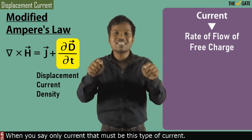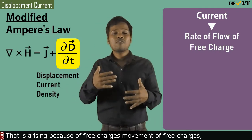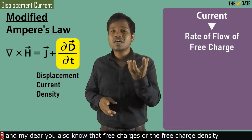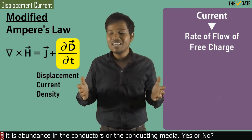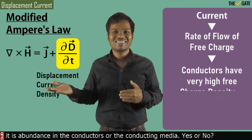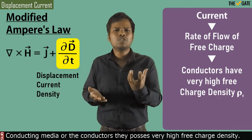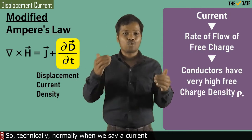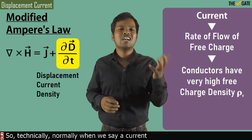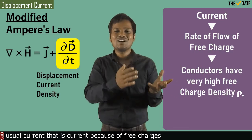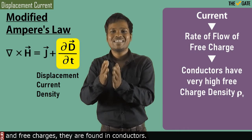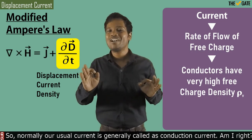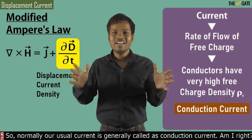When you say only current, that means this type of current arising because of movement of free charges. You also know that free charges or free charge density are abundant in conductors or conducting media. Conducting media or conductors possess very high free charge density — they have abundance of free charges. So normally when we say a current, our usual current is current because of free charges, and free charges are found in conductors. So normally our usual current is generally called conduction current.